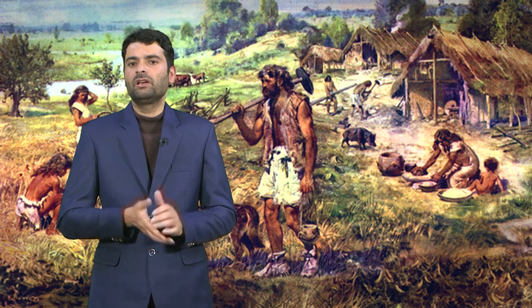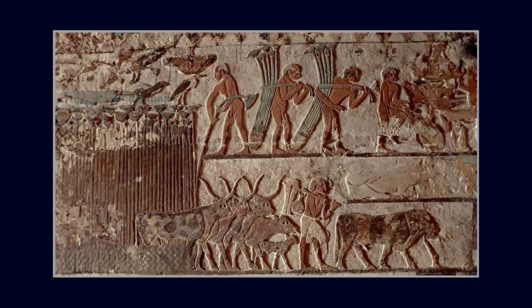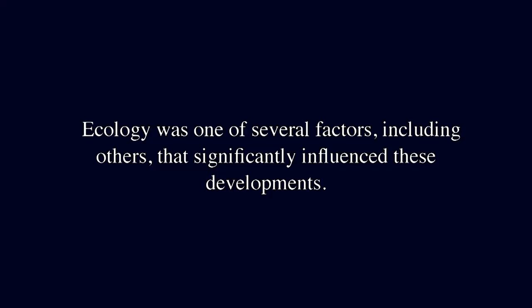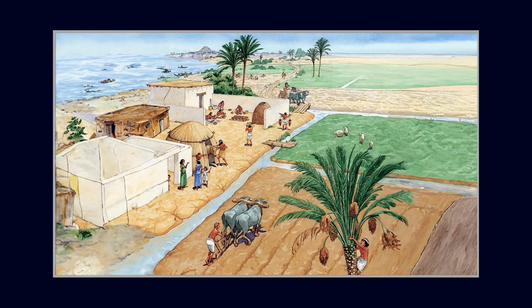Continuity and change were seen in the spread of agriculture in North India. The Harappan and post-Harappan periods are when irrigation systems first appeared, along with a list of staple crops that included rice and the usage of simple plants. Ecology was one of several factors that significantly influenced these developments. While wet rice cultivation with high yield was the trademark of the great plains, new innovations in agriculture methods brought about a new era of irrigation outside of this area.